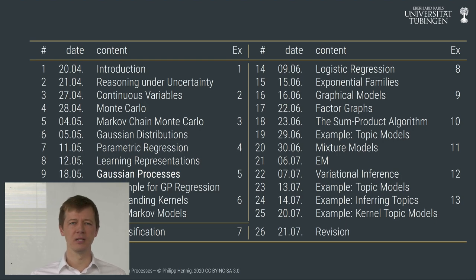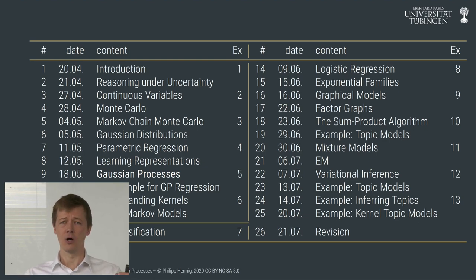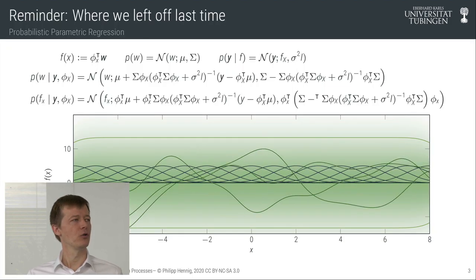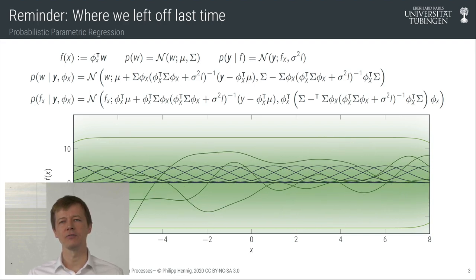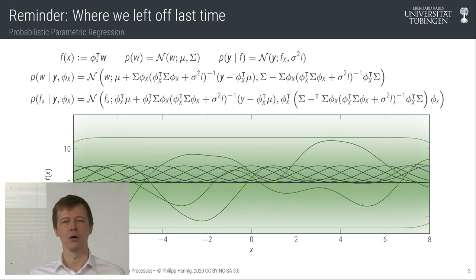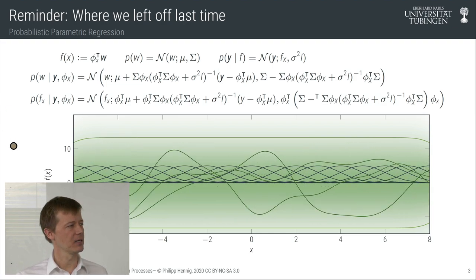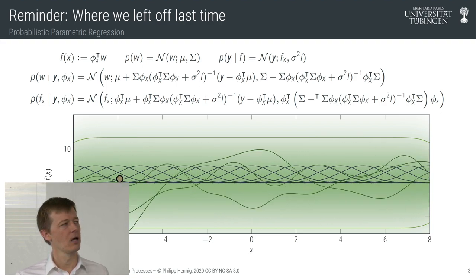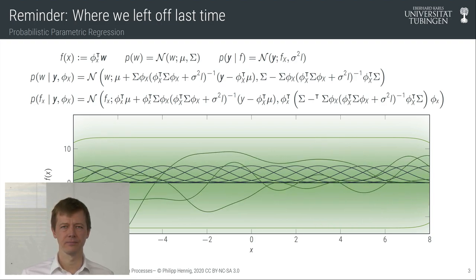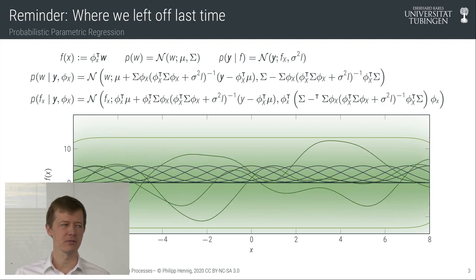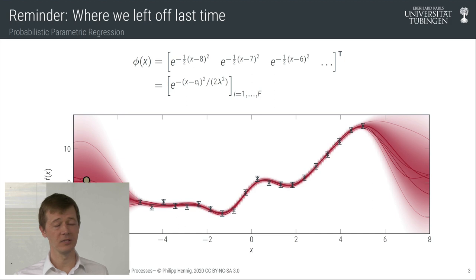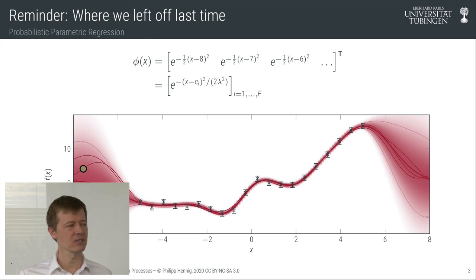In lecture seven we learned to use the Gaussian distribution not just for inference on linearly related, jointly Gaussian variables, but also to learn nonlinear functions — solving supervised learning of real-valued functions, i.e., regression. We distributed features over an input domain, assigned Gaussian-distributed weights to them, and placed Gaussian observations of the function — a linear combination of features — to compute posterior distributions over the function and underlying weights.